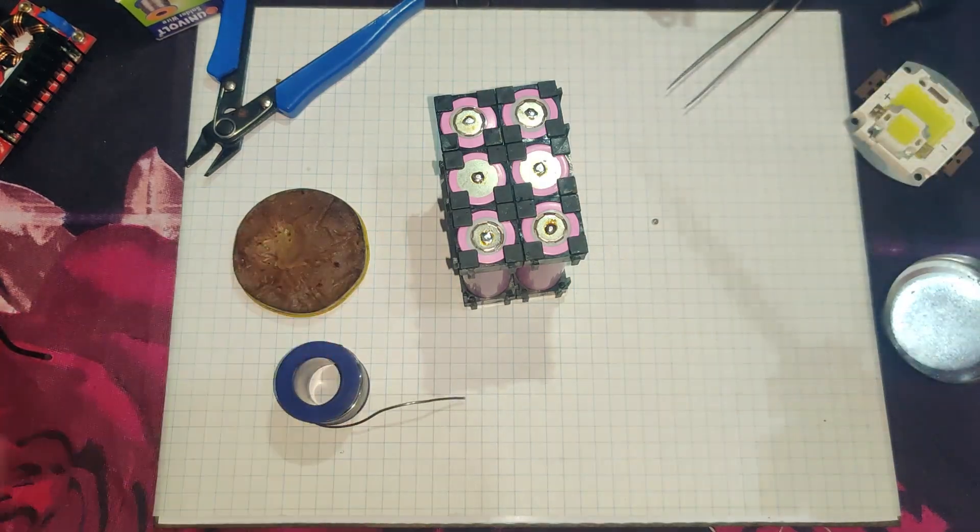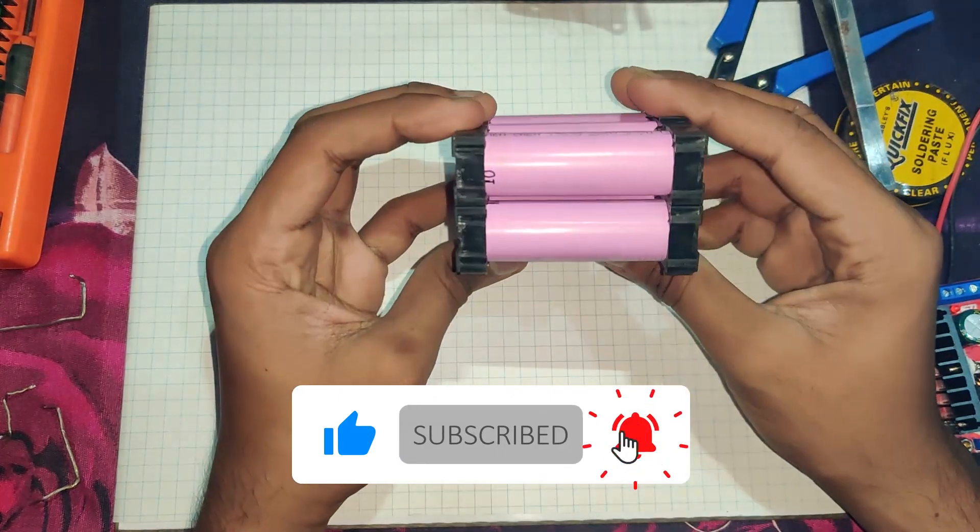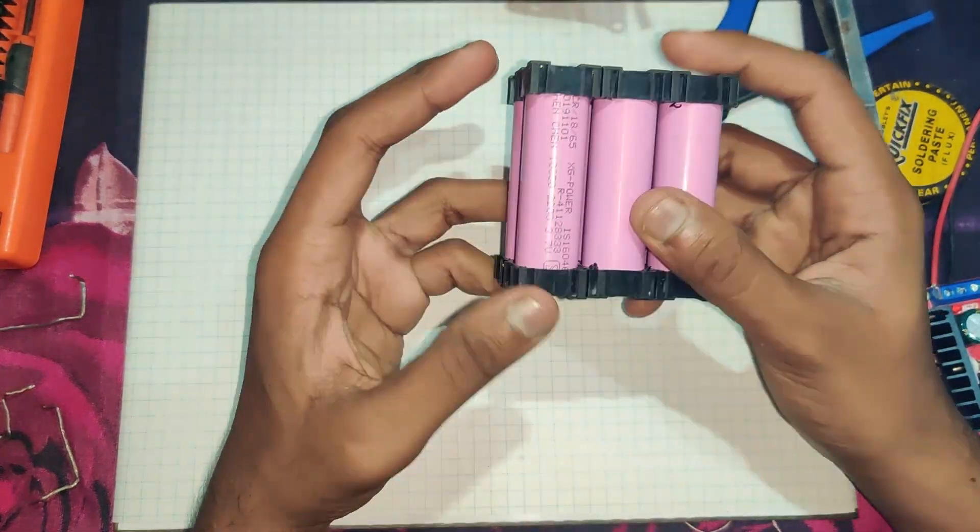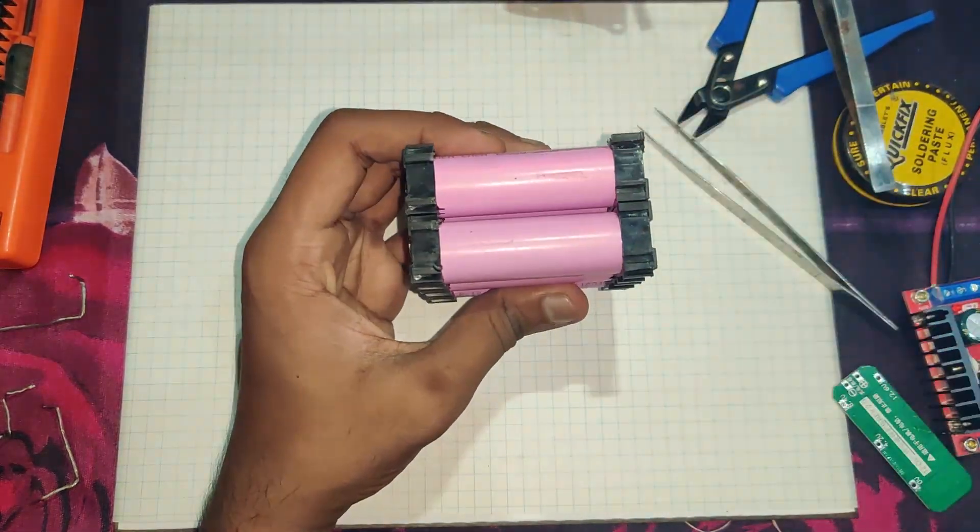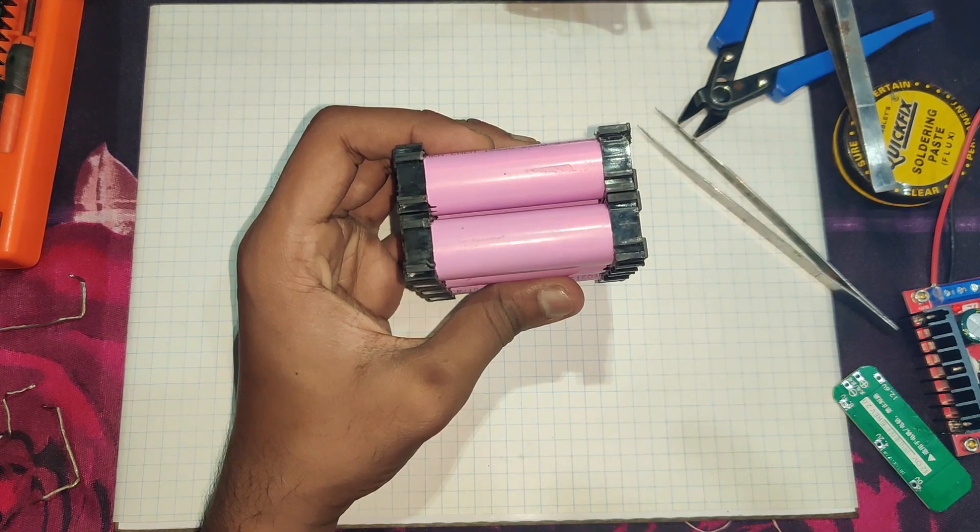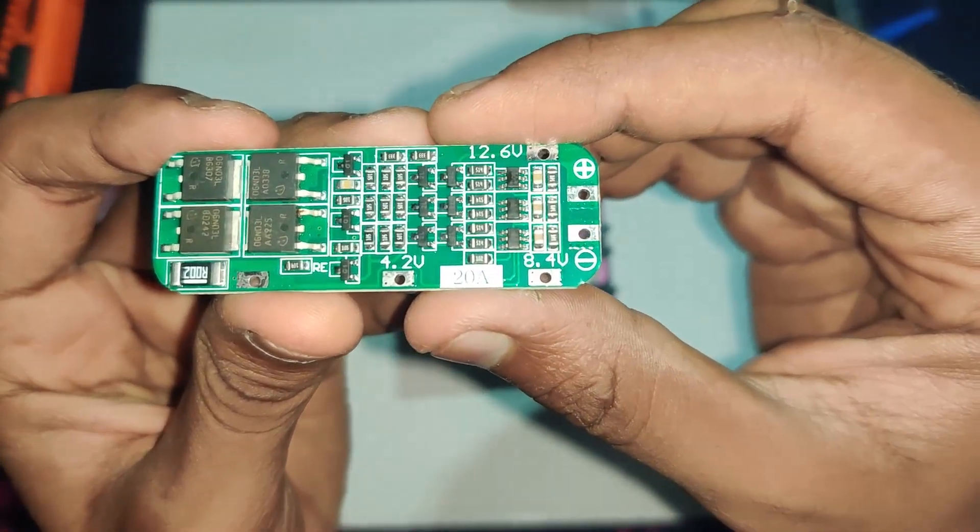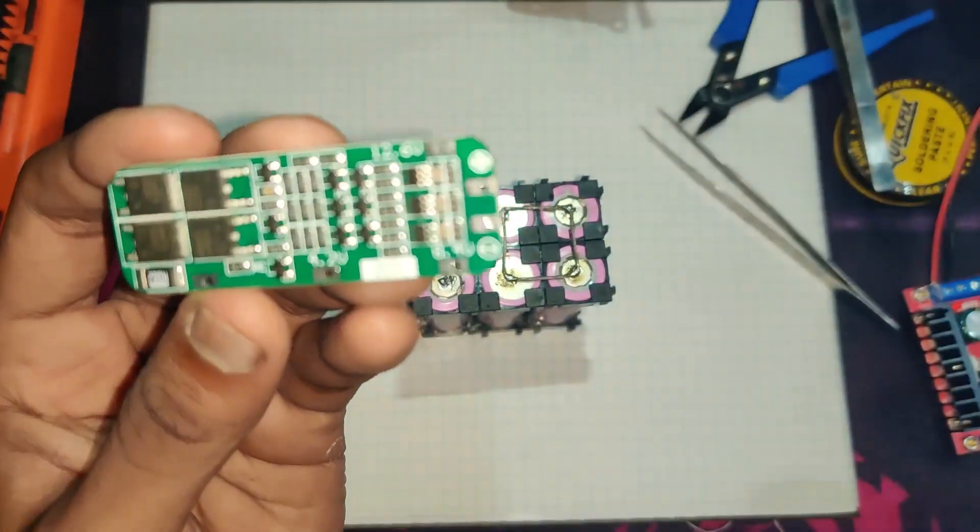I have done the connections in 3S 2P. Now I'm going to connect the BMS to the battery pack according to the circuit diagram.